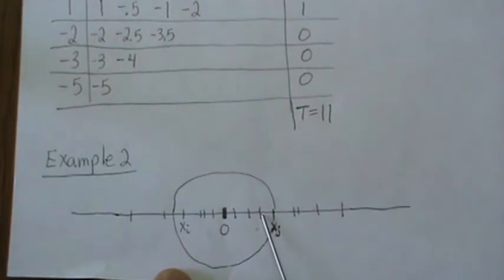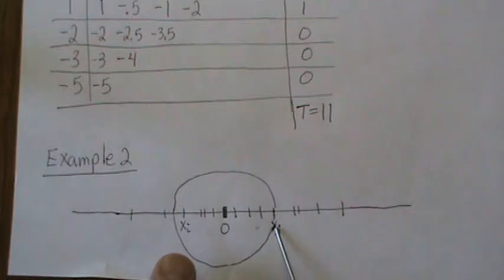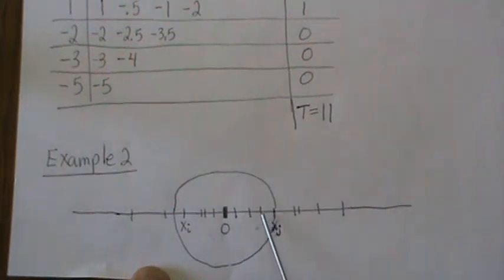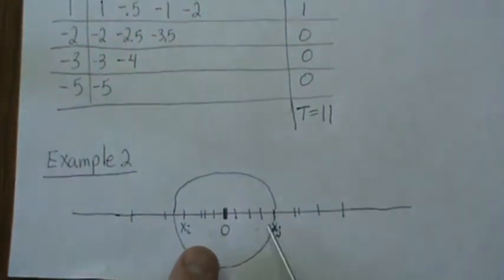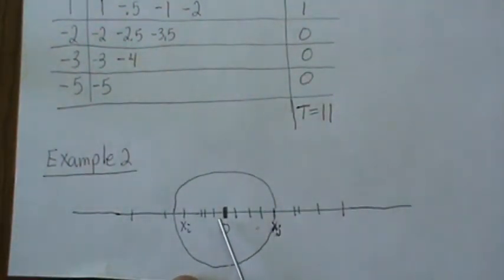Only the values in this circle are going to be positive, because this value in absolute value is bigger than all of these. The number of these, one, two, three, four, five, six, seven, eight...